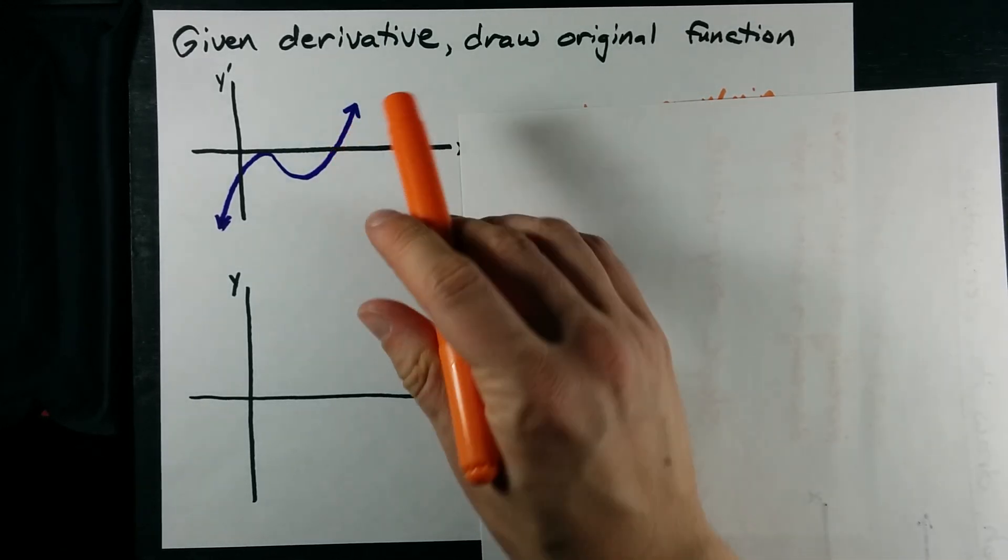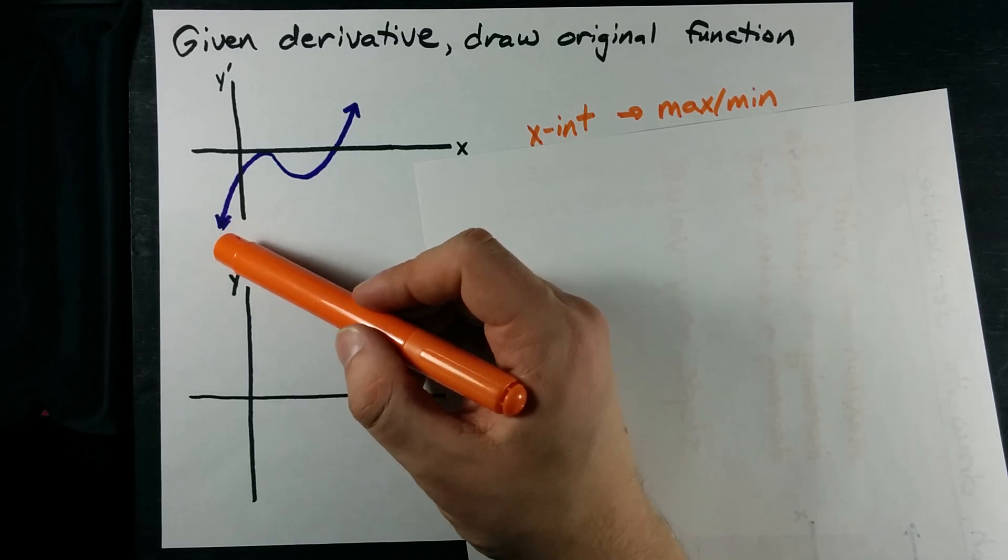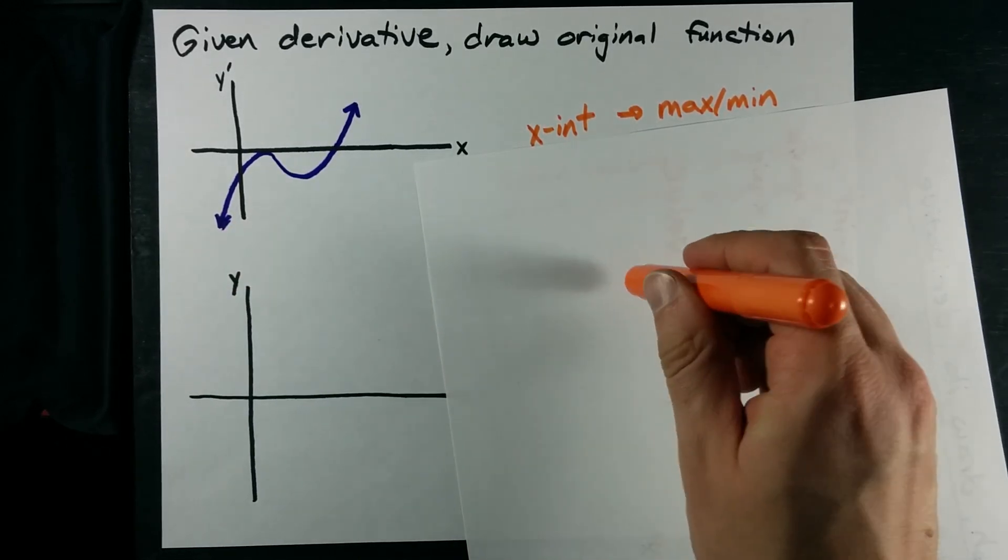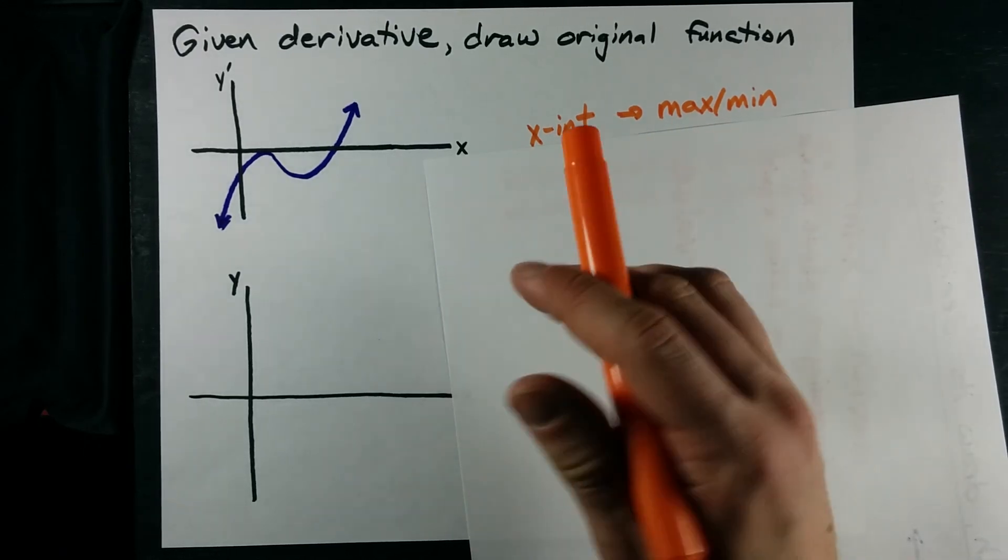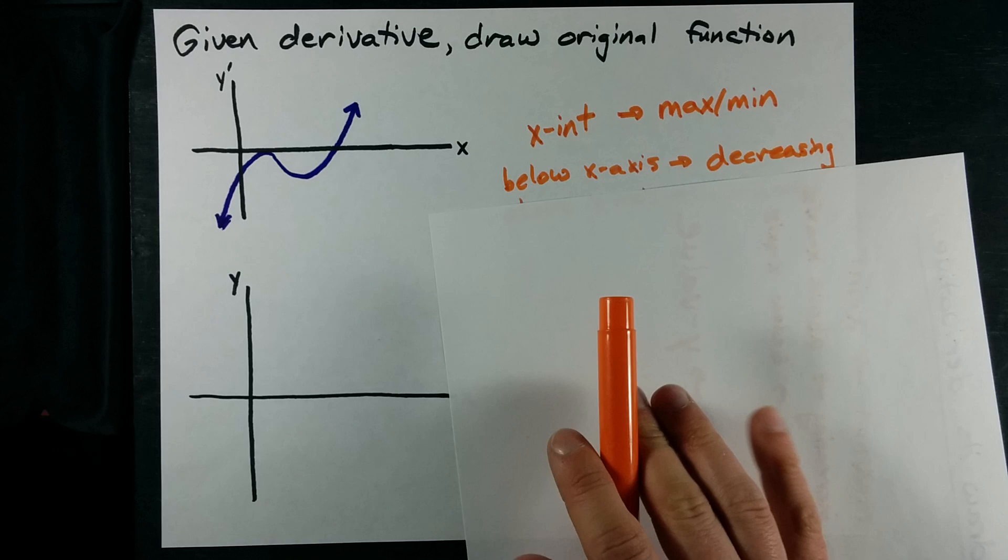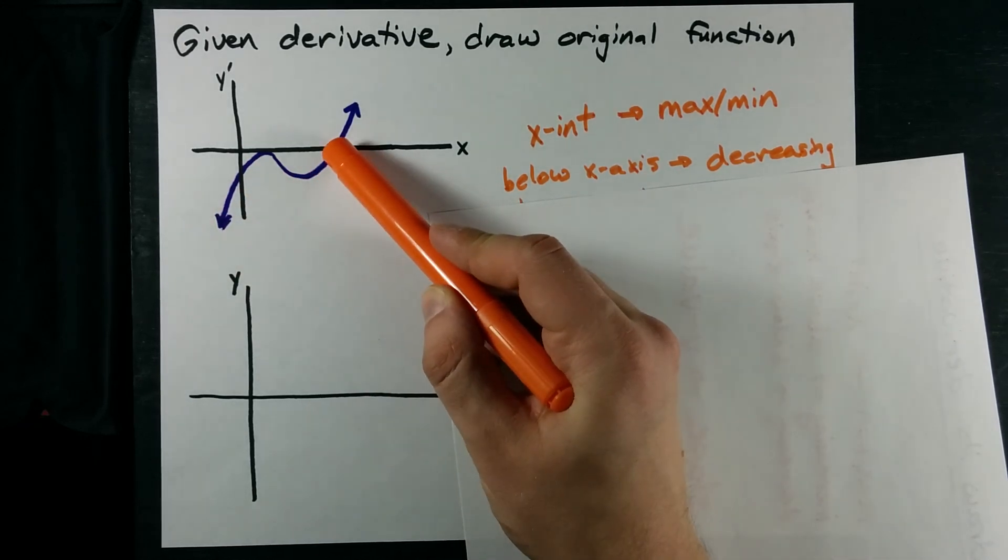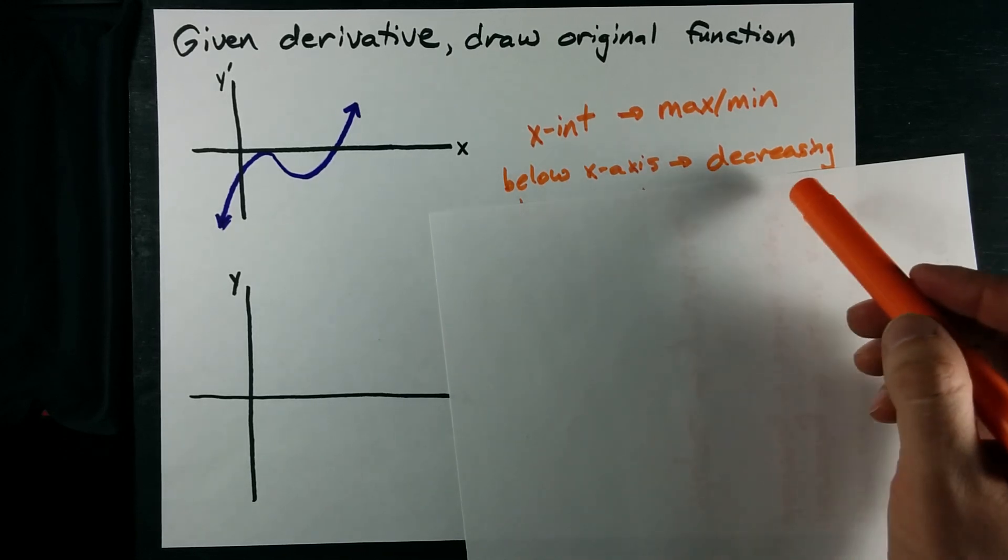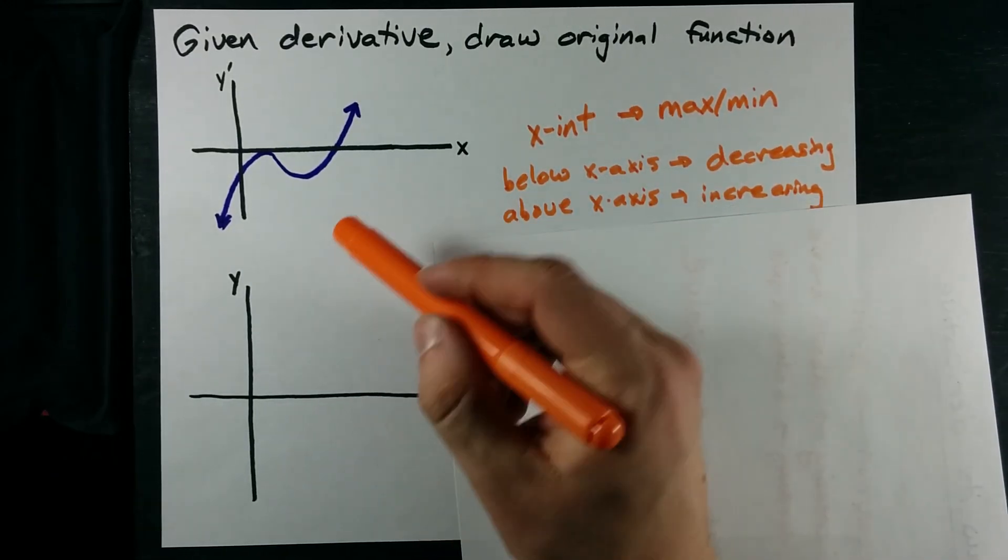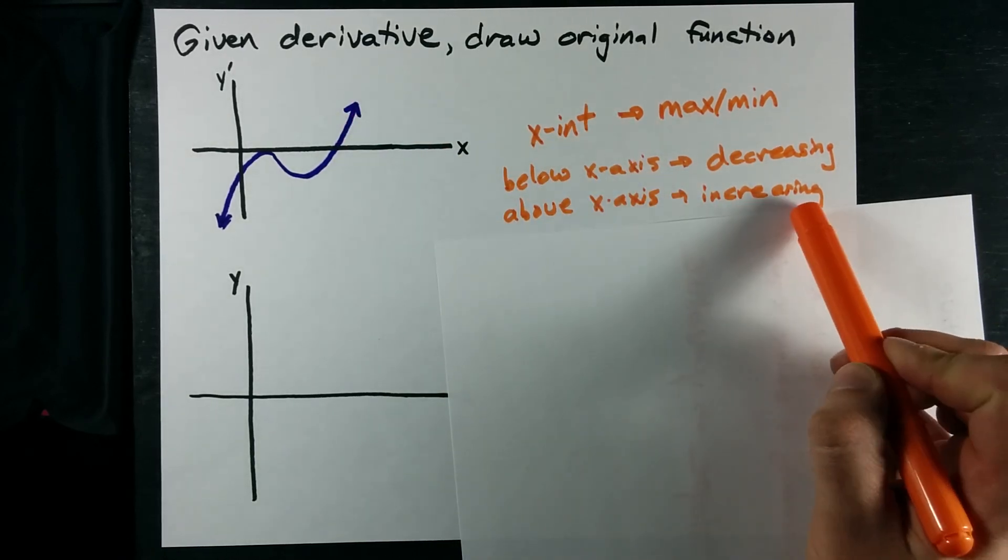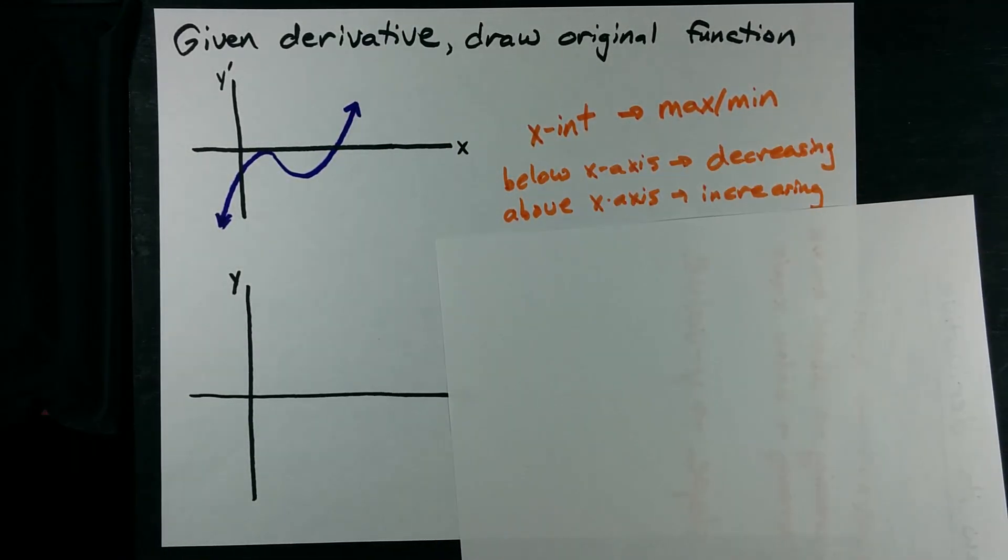Now, you'll also know that the derivative is negative if the function was decreasing and positive if the function was increasing. So, if the graph of the derivative is below the x-axis, that's negative, the original function is decreasing. And, if your derivative is above the x-axis, it means your original function was increasing there.